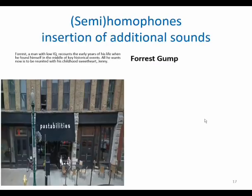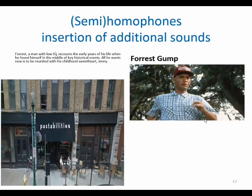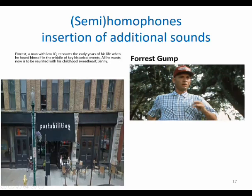Another example: here we have 'Pastabilities' — an Italian shop. What does it rhyme with? 'Possibilities' — just inserting 'ta' in the middle. But why? Because it's 'pasta' — pasta and abilities. Look at this: a compound of two words, and it's very indicative. It talks about the properties of pasta — a really catchy name.